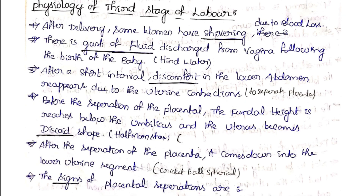Next, physiology of the third stage of labor. After delivery, some women have shivering due to blood loss. There is a gush of fluid discharged from the vagina following the birth of the baby.